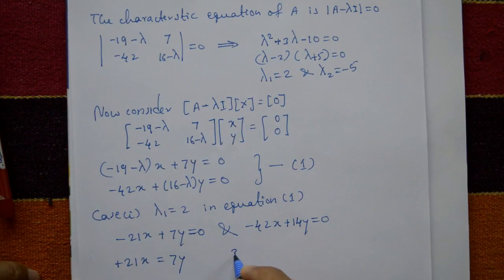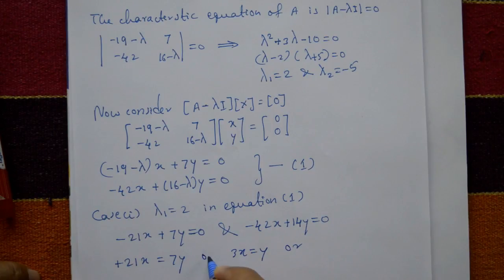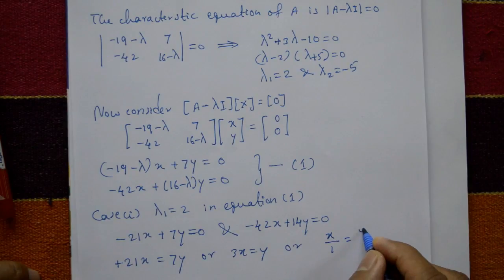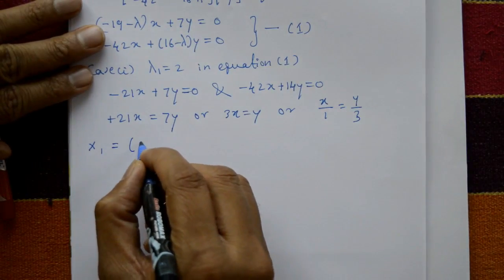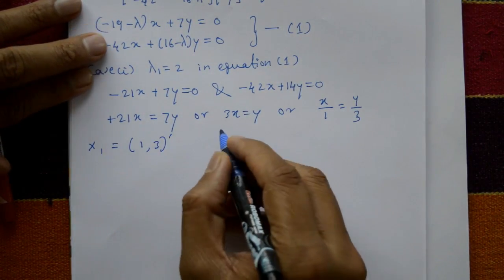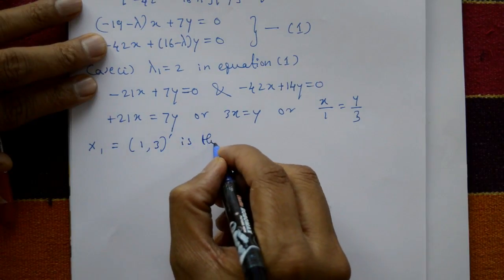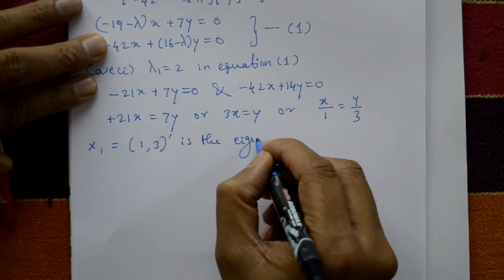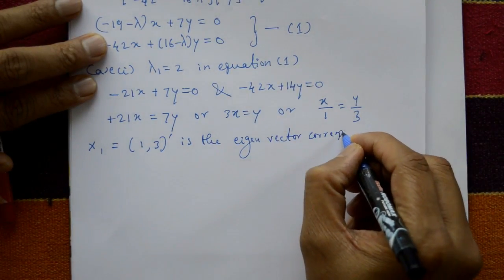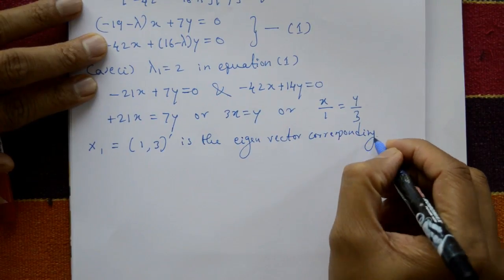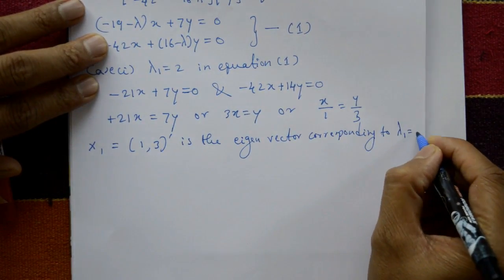From minus 21x plus 7y equals 0, we get 3x equals y, or x/1 equals y/3. The first eigenvector x1 is the column matrix [1, 3], corresponding to lambda 1 equal to 2.